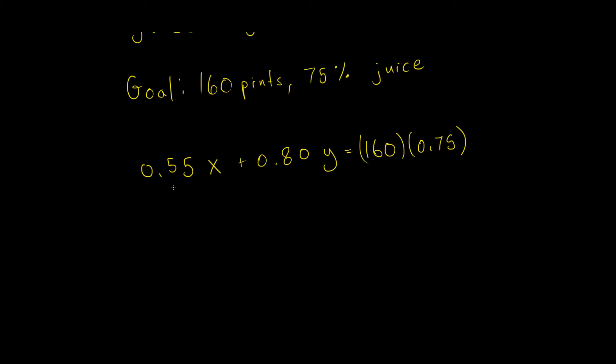So 0.55X plus 0.80Y equals, and then I'm just going to simplify this. So one quarter of 160 is 40, so then three quarters is 120. So in the end, I want 120 pints of real juice out of 160 total.